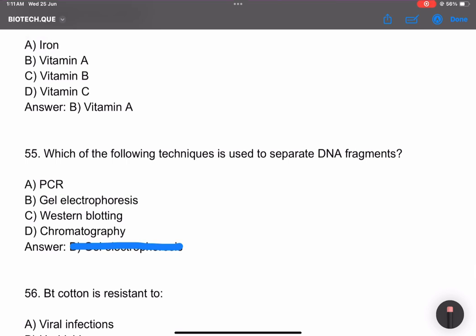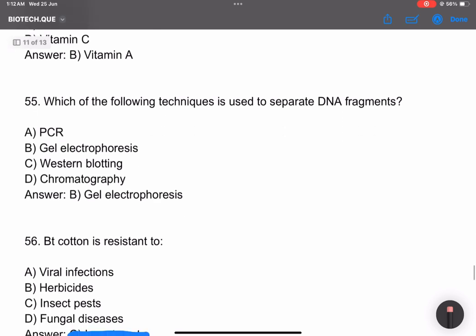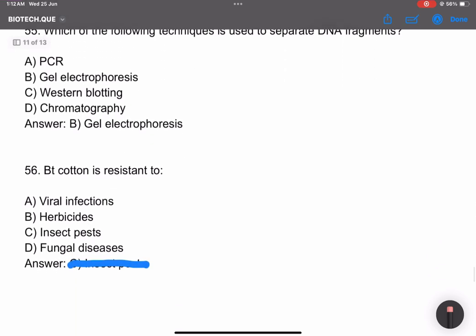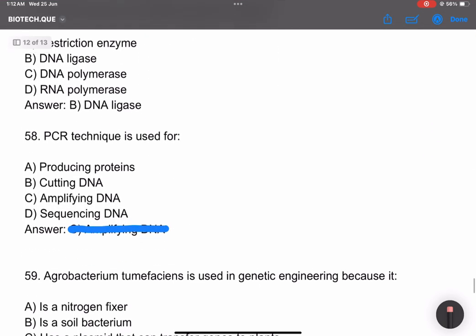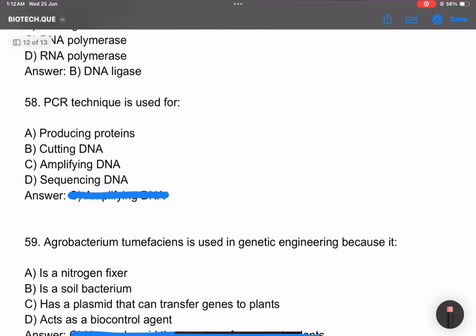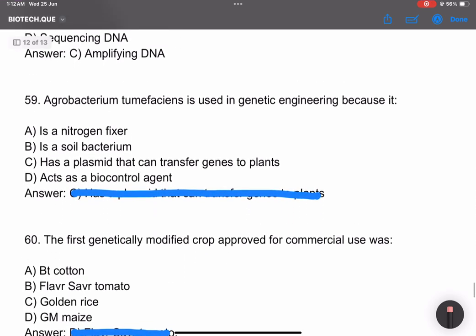Which is used as a vector? Plasmid. Restriction enzymes are known as endonucleases. Golden rice contains vitamin A. Electrophoresis technique helps to separate DNA fragments. BT toxin is resistant to insect pests. Which enzyme joins DNA fragments together? DNA ligase cuts, but we need ligase to join. PCR is for amplifying DNA. Agrobacterium tumefaciens is used in genetic engineering because of its plasmid that can transfer genes to plants.